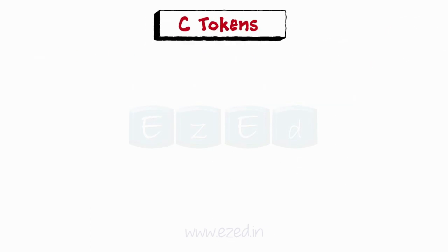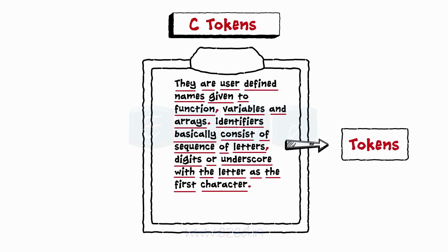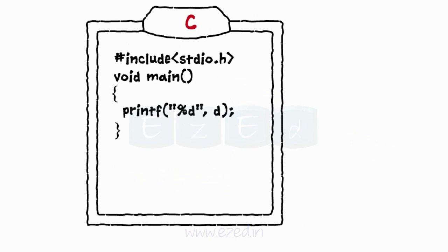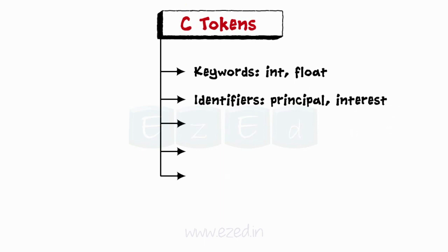Let's learn C tokens now. In a passage of text, individual punctuation marks and words are called tokens. In a C program, the smallest individual units are called C tokens. There are five types of C tokens: Keywords, Identifiers, Constants, Separators, and Operators.